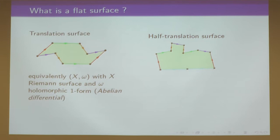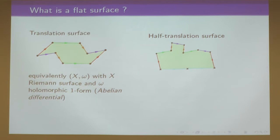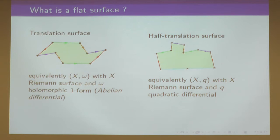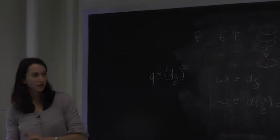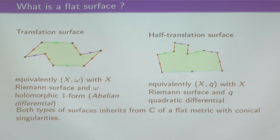We do the same for half-translation surfaces. This time we allow identifying sides by translation and flip. This is equivalent to looking at Riemann surfaces equipped with quadratic differentials, which are differentials that look like dz² in local coordinates. Since we draw these surfaces in the plane, both surfaces inherit a flat metric with conical singularities. In this second example, there is one point of angle π here, one here, and also two points of angle 3π.